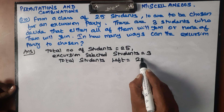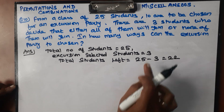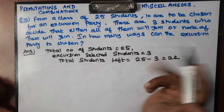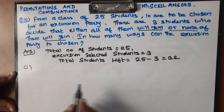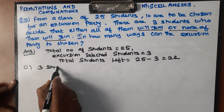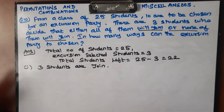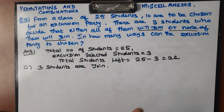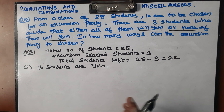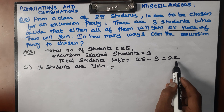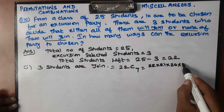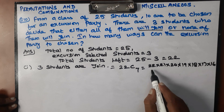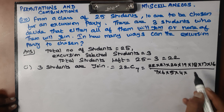Remaining students: 25 minus 3 is equal to 22 students. The 3 students will either all join or not join. Case 1: all 3 students are joining. So from the remaining 22 students, we need to choose 7 more to make 10. That gives us 22C7. So: 22 × 21 × 20 × 19 × 18 × 17 × 16 divided by 7 × 6 × 5 × 4 × 3 × 2 × 1.